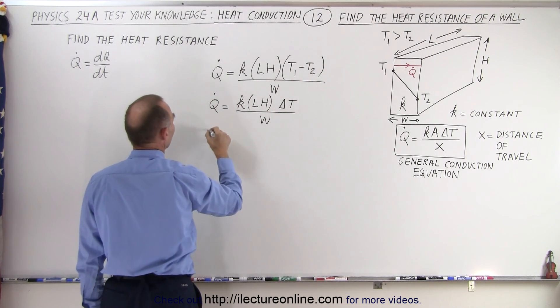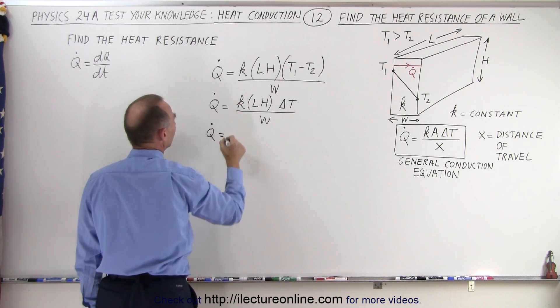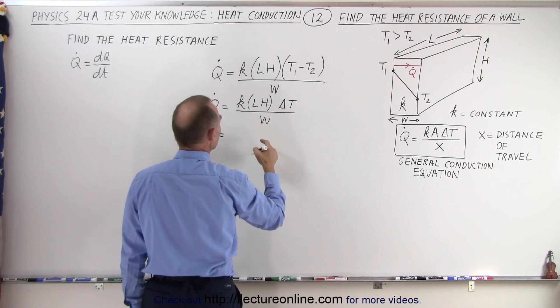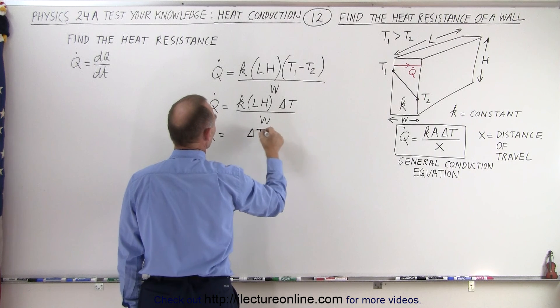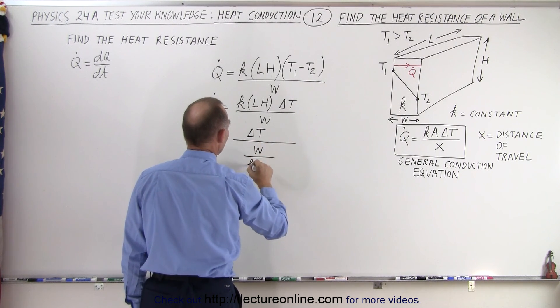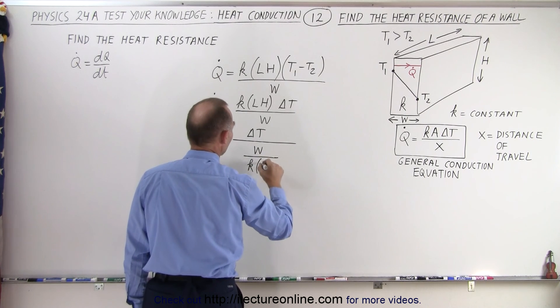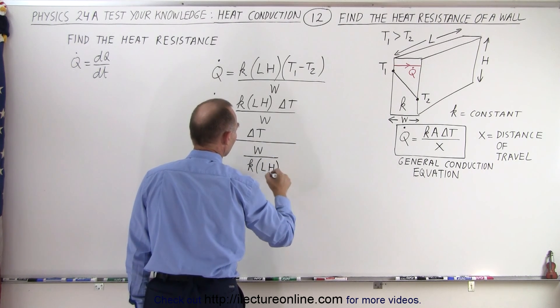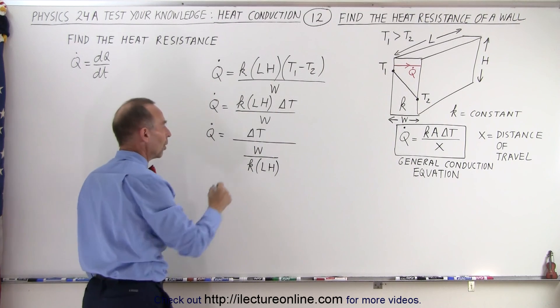And then finally we have Q dot equal to delta T divided by the ratio of the width divided by K times the cross-sectional area, which in this case would be the length times the height. So that would be the cross-sectional area of the wall.